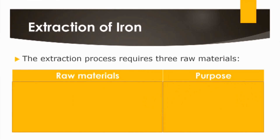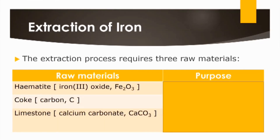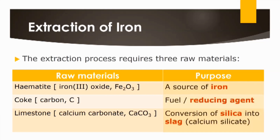This extraction process requires three raw materials: hematite, coke, and limestone. Do take note of their chemical formulae and make sure you are able to write them out. Hematite serves as a source of iron — it is the only raw material that contains the iron element. Coke, as mentioned previously, acts as a reducing agent.